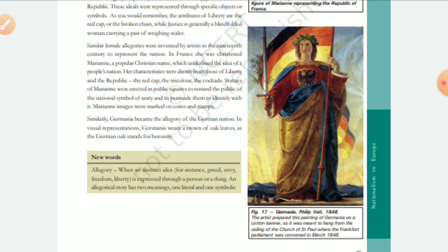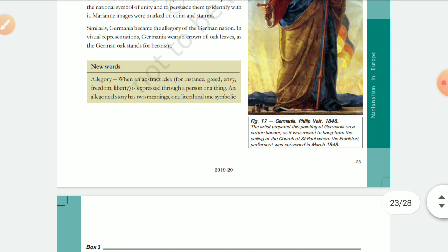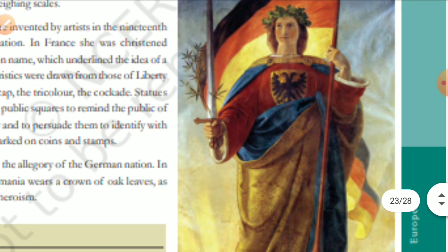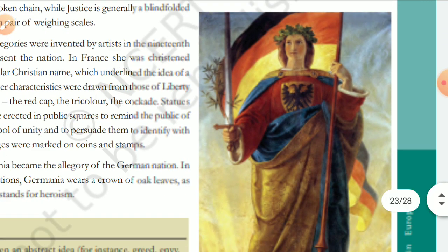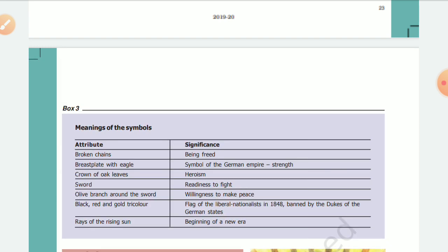Looking at the attributes table: broken chains represent being freed — that is the symbol of freedom. The breastplate with eagle is a symbol where an eagle's picture is present, and this breastplate with eagle represents the German Empire and German strength.